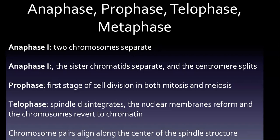Prophase is the first stage of cell division in both mitosis and meiosis. Beginning after interphase, DNA has already been replicated when the cell enters prophase. The main occurrences in prophase are the condensation of the chromatin and the disappearance of the nucleolus.